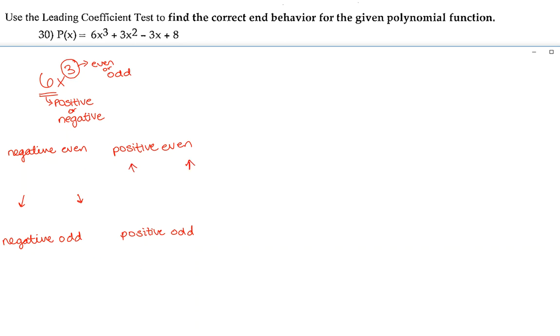When the coefficient is negative and the degree is odd, your end behavior will rise to the left and fall to the right. When your coefficient is positive and your degree is odd, you'll have end behaviors that fall to the left and rise to the right.